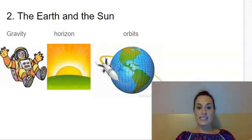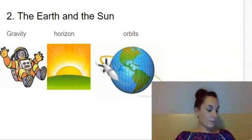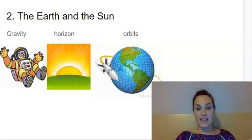And the last one is orbits. Say orbits. Orbits is a curved path that one object takes around another, usually in space.